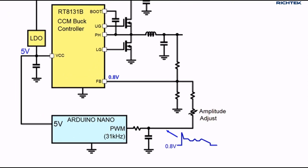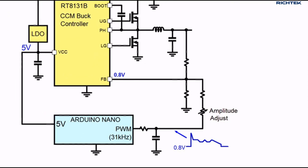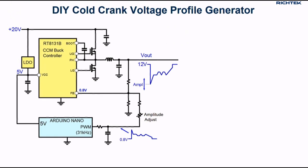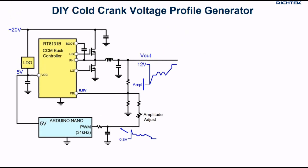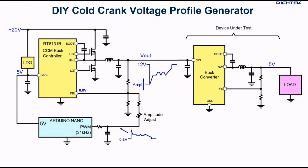The Arduino PWM duty cycle is programmed to generate the inverse cold crank profile. The filtered PWM is then used to modulate the feedback voltage of the buck controller. Via an adjustable resistor, the modulation depth can be varied. The output of the buck converter will now follow the feedback voltage signal and this waveform can be used to test various applications.